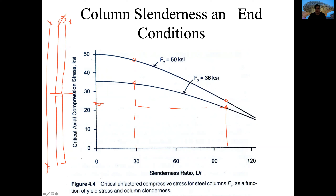Independent of the type of steel used, the slenderness ratio is important because the more slender the column, the more problems it will have. That is why professors of design tell you that for very long columns you need to use bracing or make those columns bigger in proportion.